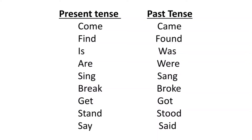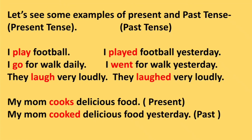Here are the examples of some verbs in present and past tense. Let's see some more examples of present and past tense. I played football yesterday. I go for a walk daily. I went for a walk yesterday.